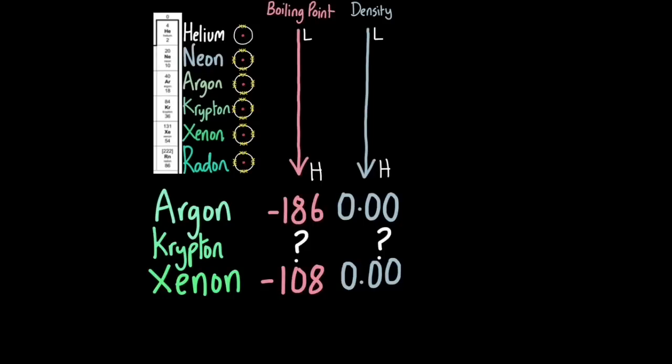In exams they may give you a table of properties, for example they may show you argon with a boiling point of minus 186 and a density of 0.0018 grams per centimetre cubed and xenon with minus 108 and 0.0059 grams per centimetre cubed. They may ask you to estimate the boiling point of krypton and the density of krypton.